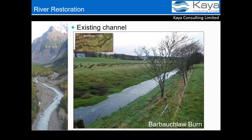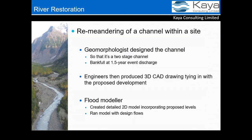The first case study is a river restoration project on the Bar Book Burn in West Lothian. The channel was artificially straightened for farming purposes around the 1800s — you can see in the inset map that it naturally would have meandered. The task was to design a more natural channel and restore a reach of about 400 meters to its natural meandering state. The geomorphologist designed it as a two-stage channel, bankfull at approximately a 1.5-year event discharge. Engineers produced a 3D CAD drawing tied to a proposed residential development, and Lee was tasked with creating the 2D model incorporating all proposed levels and channel bathymetry.